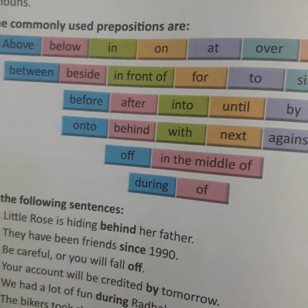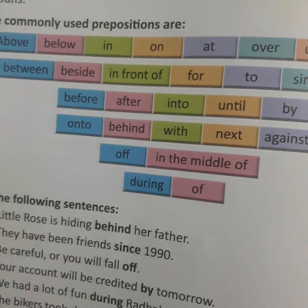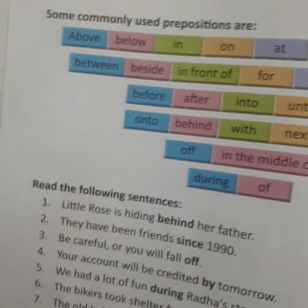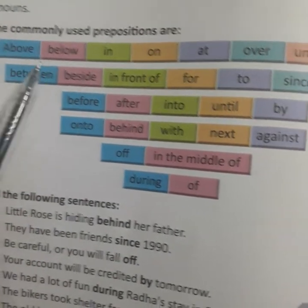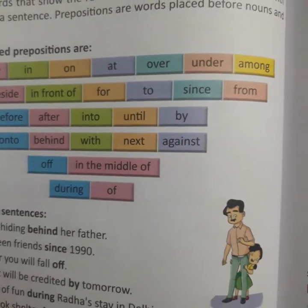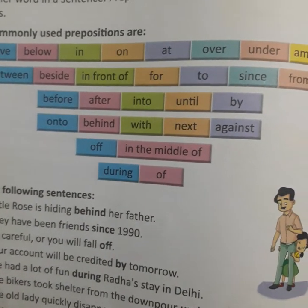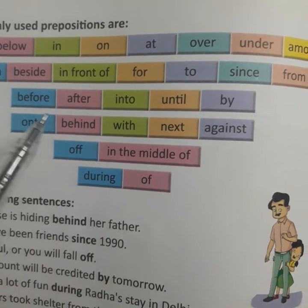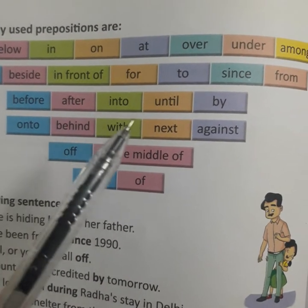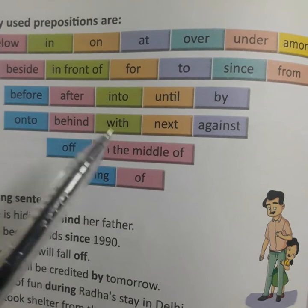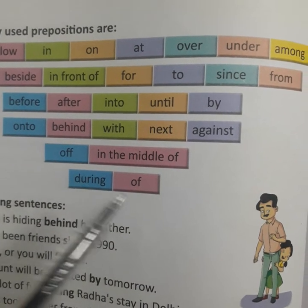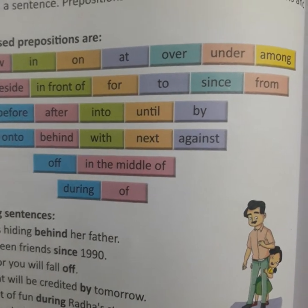Some commonly used prepositions are — commonly जो prepositions यूज की जाती है, वो कौन कौन सी है? Above, below, in, on, at, over, under, among, between, beside, in front of, for, to, since, from, before, after, into, until, by, behind, with, next, against, off, in the middle of, during.